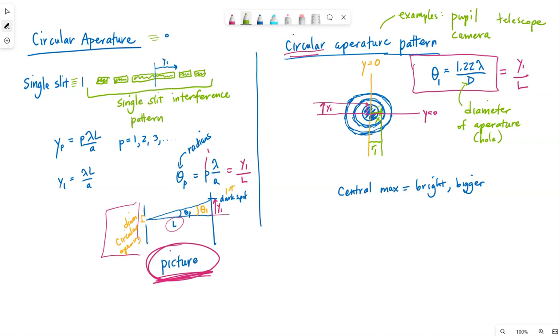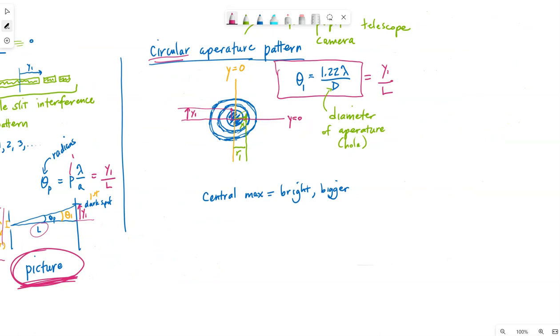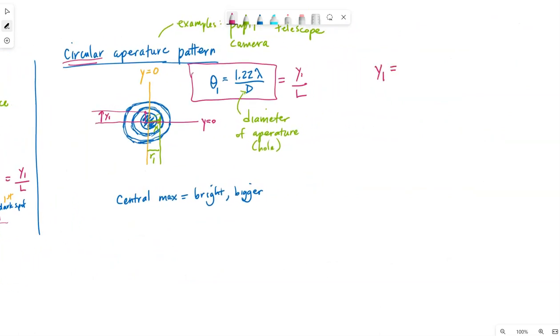As far as the equation is concerned, we can take this and say that Y1 will be 1.22 lambda L over D. Where that first dark spot is located from the center of the pattern depends upon the wavelength of light, how far away the circular aperture is from the screen, and then diameter of the opening. If we want the width of the central max, which is often what we will want, similar to the single slit, that will just be double Y1. So 2.44 lambda L over D.